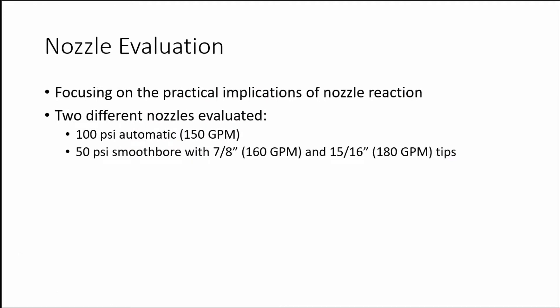There are videos out there that explain how to accurately measure nozzle reaction by using scales, but for this video we are simply focusing on the practical implications of nozzle reaction based on the types of nozzles we have available to us. For this experiment we are going to be looking at two fire service standbys: the 100 PSI automatic nozzle flowing 150 gallons per minute, and the 50 PSI smoothbore nozzle with both a 7/8" tip flowing 160 GPM and a 15/16" tip flowing 180 GPM.